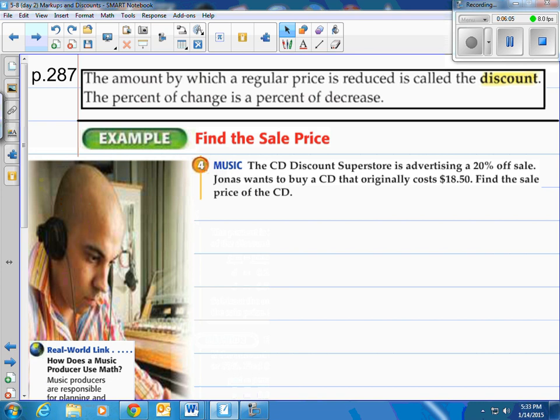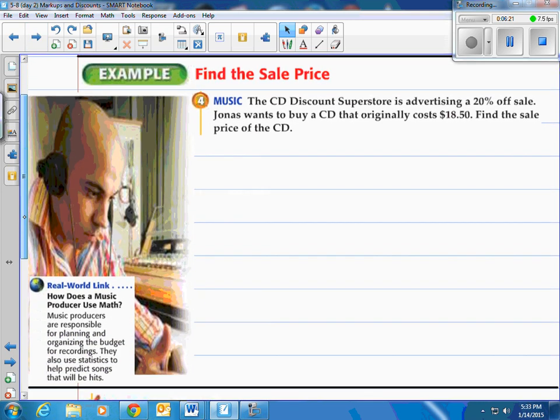Let's talk about discounts. The amount by which a regular price is reduced is called the discount. We see these in stores like a 10% discount or take 30% off. The percent of change is a percent of decrease in this case. So let's take a look at our music producer here.